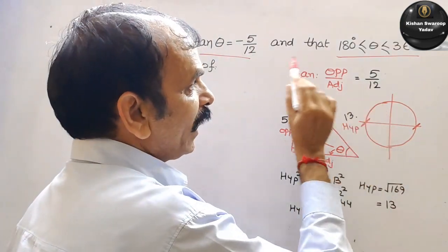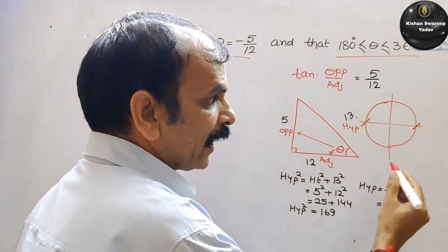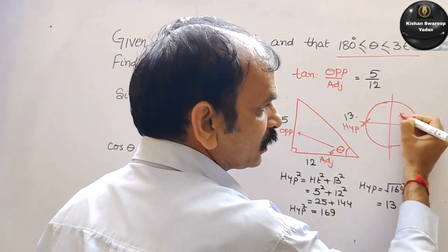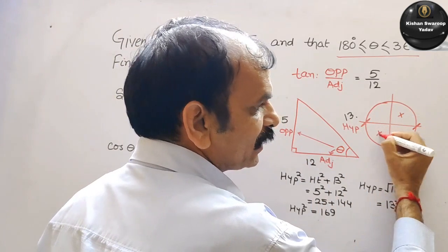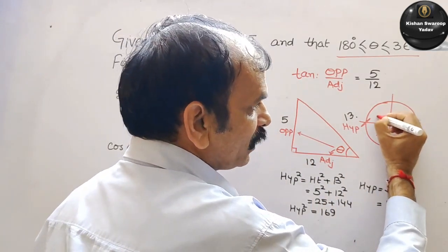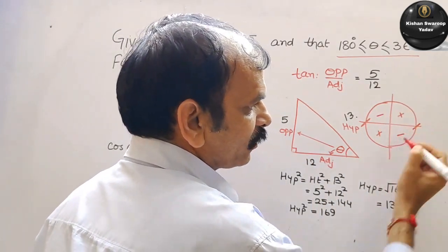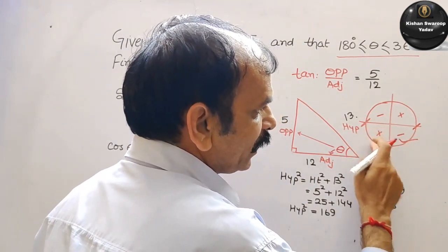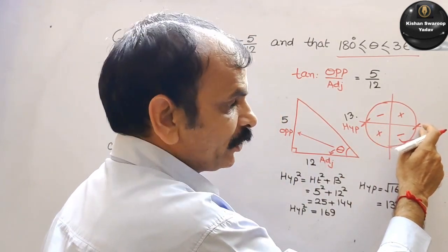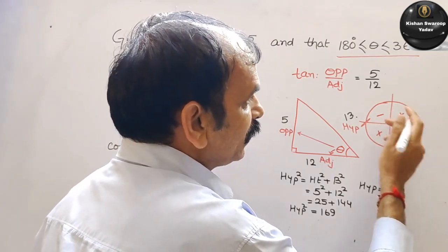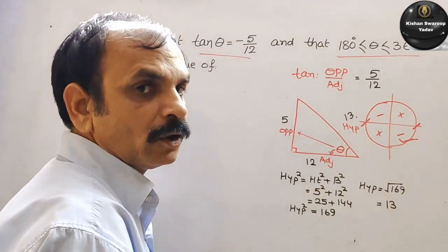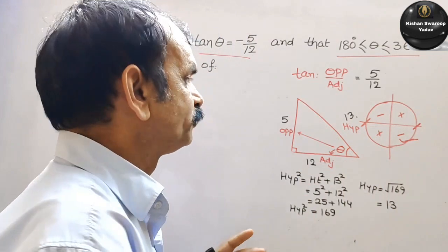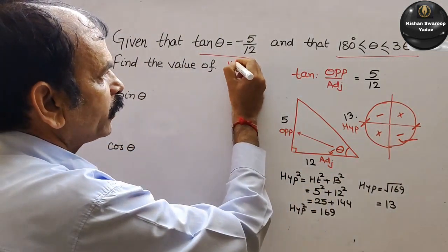Now where tan is negative. We know that tan is positive in the first and positive in the third, negative in the second one and negative here. Now this is your range 180 degree to 360 degree. That means they are talking about 4th quadrant. Simply we will say 4th quadrant.